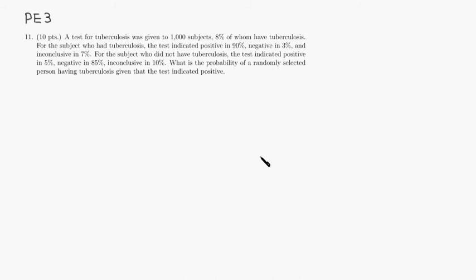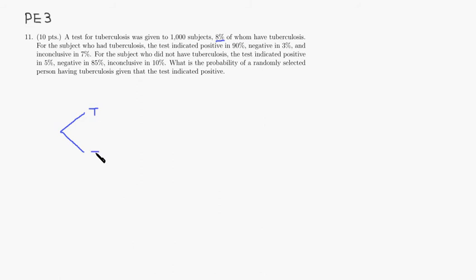Let's look at practice exam 3, number 11. You have 1,000 people and 8% have tuberculosis. I'll divide into two groups: T for tuberculosis and T complement for not having tuberculosis. So the probability of having tuberculosis is 0.08.